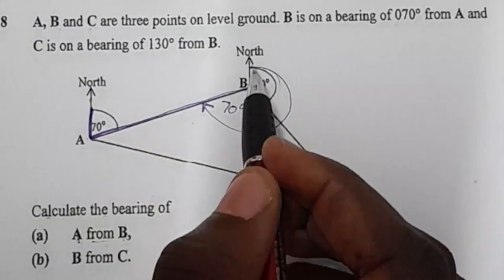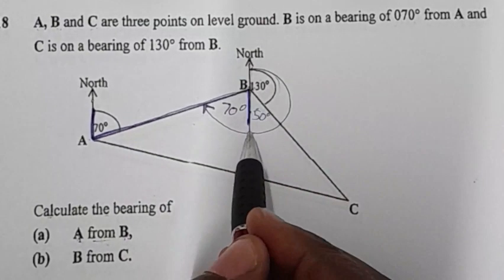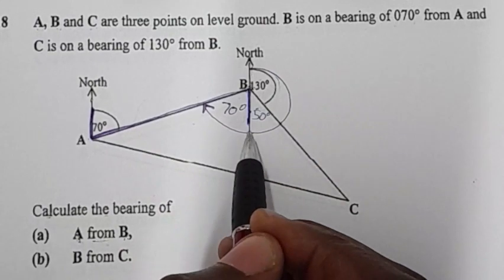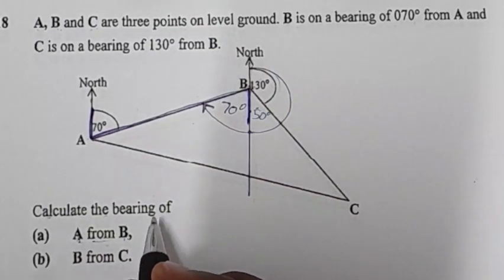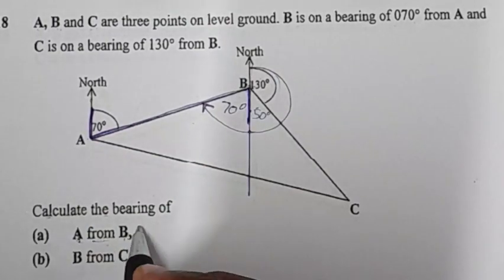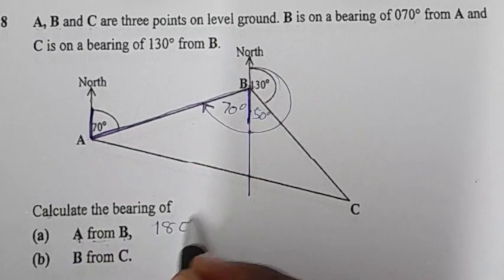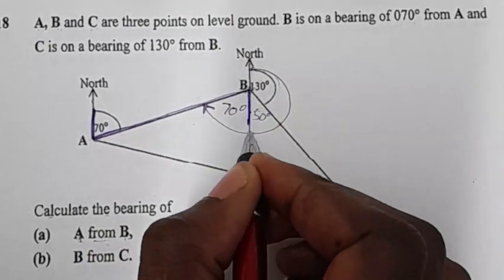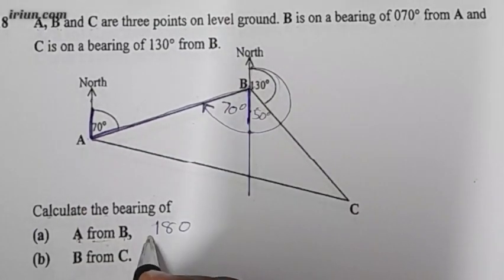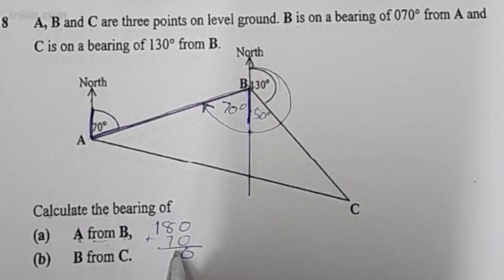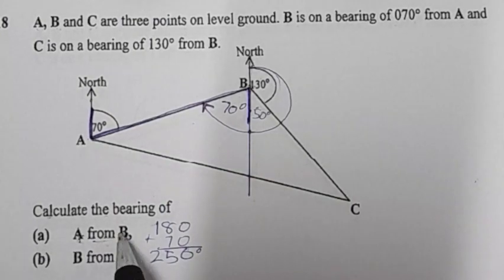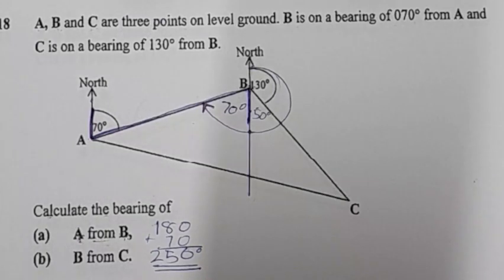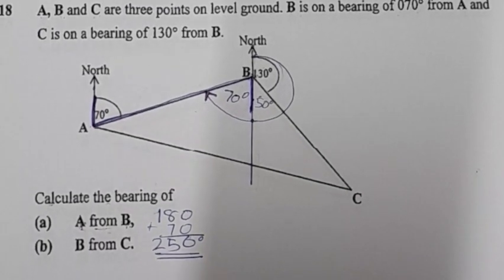We have already said that this is a straight line, so we have 180° up to here, plus 70 degrees. So the bearing of A from B will be 180 plus 70 degrees, which gives us 250 degrees. The bearing of A from B is 250 degrees.